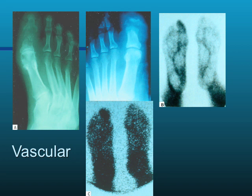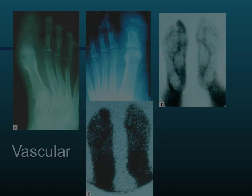Here are plain films and bone scan images of vascular contiguous osteomyelitis — diabetic foot infections. In this hallux, you can see the first joint entirely destroyed. The bone scan shows a hot spot, basically a darkened area of inflammation.